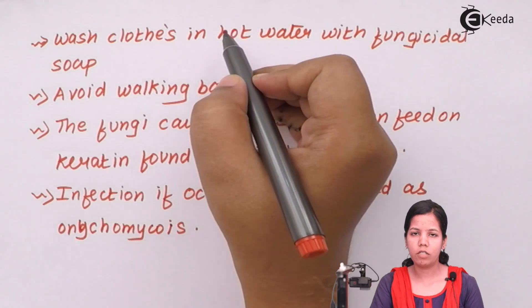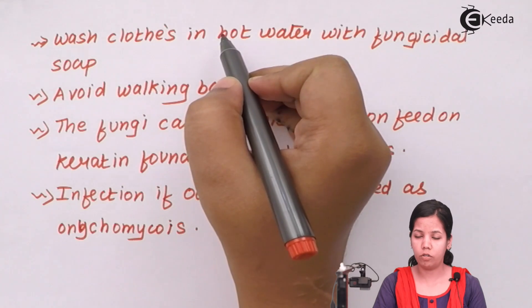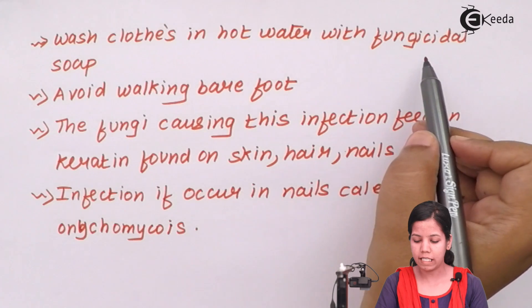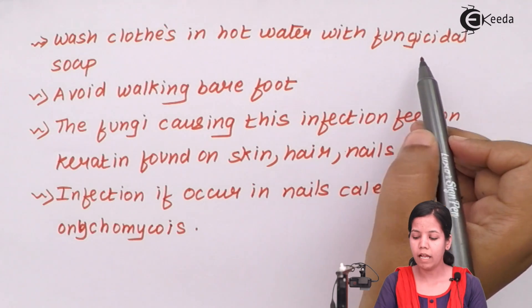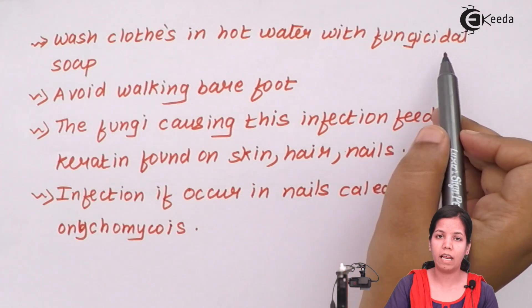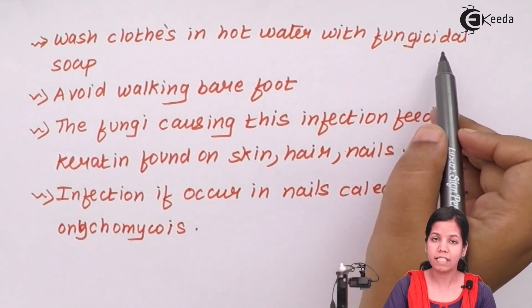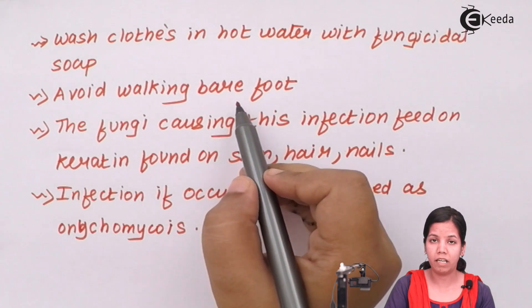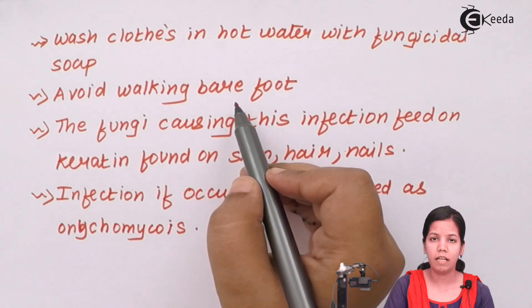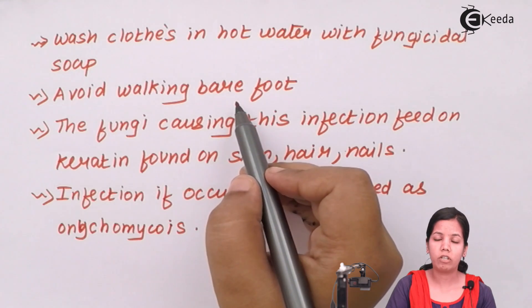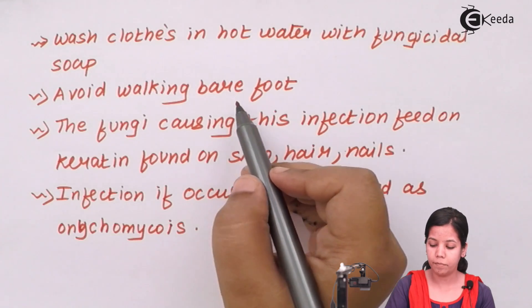For prevention, so that you do not contract or spread fungal disease to another individual, you need to use fungicidal soaps to wash your clothes and footwear. Fungicidal soaps kill fungus or remove fungal stains and patches present on your footwear and clothing. Avoid walking barefoot if you have a fungal infection, especially in the foot region, because soil has other kinds of bacteria that could cause additional infection to the already infected area.